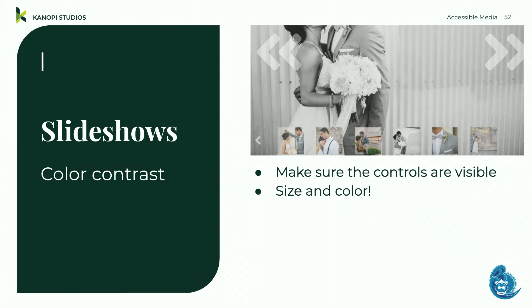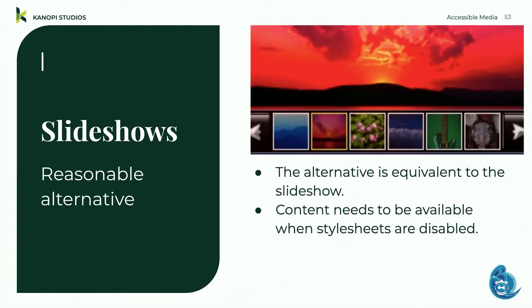Make sure controls are visible — be aware of size and color. If you have controls over a changing background image, putting controls outside the background image really helps accessibility. Size and color matter: can someone with palsy reach your controls? Ensure there's an alternative to your slideshow — it doesn't have to be exactly the same, but should have most of the information. The slideshow doesn't need to function if style sheets are turned off, but the information must still be available.